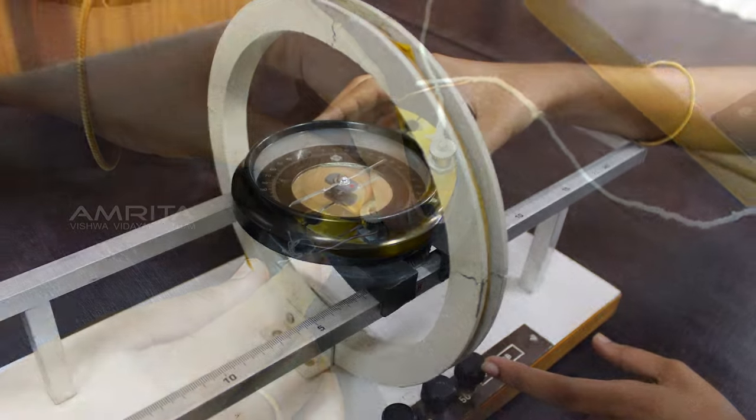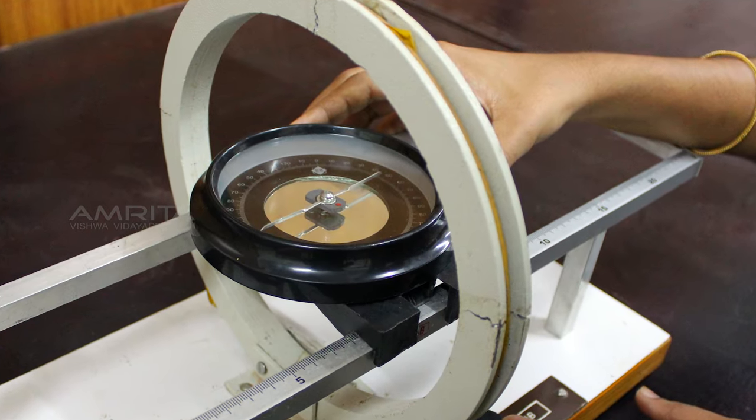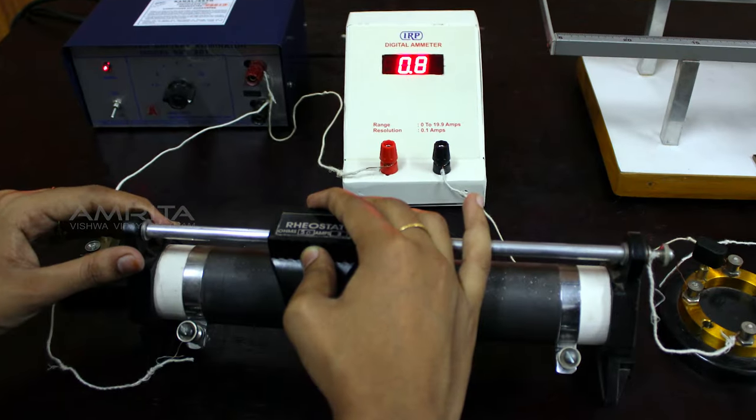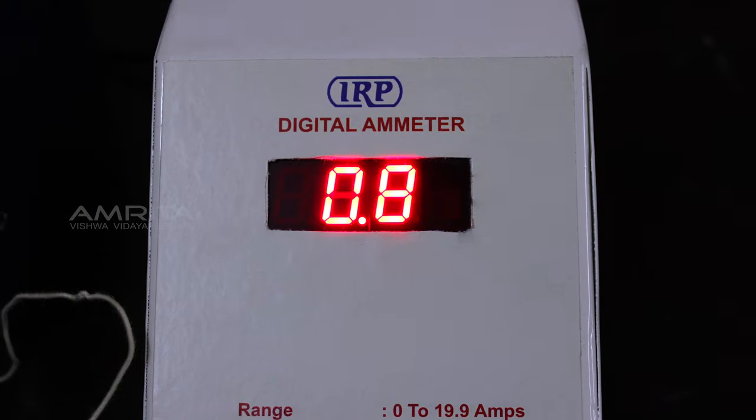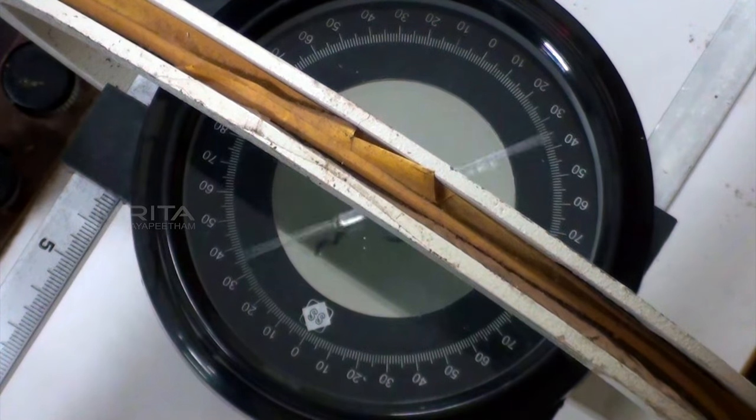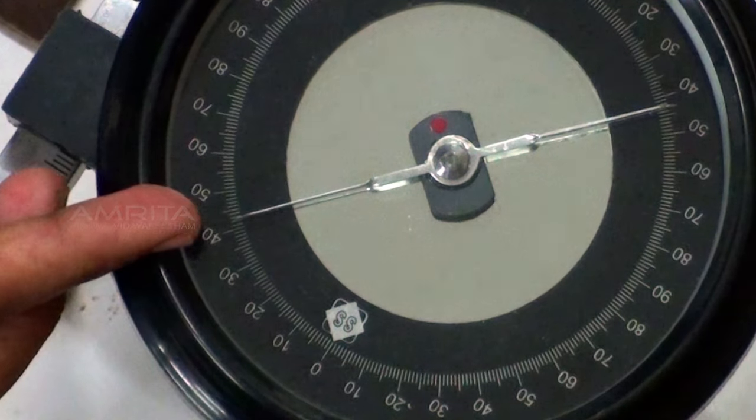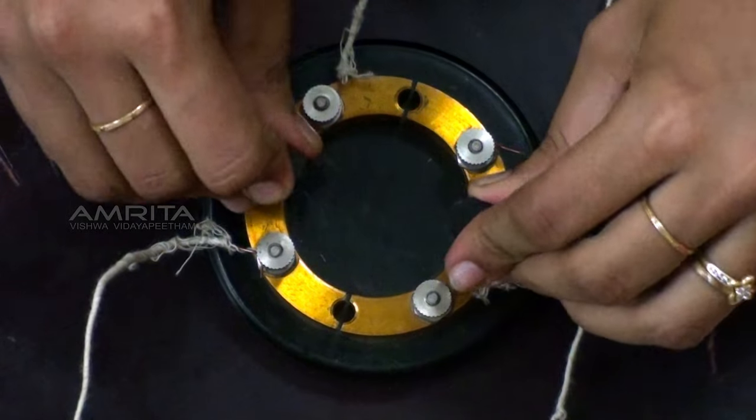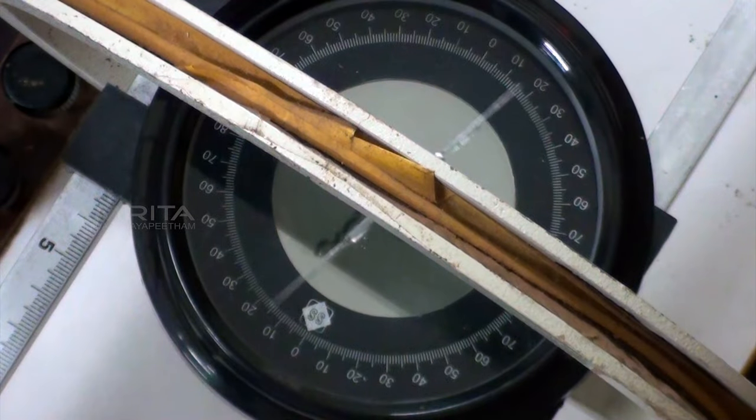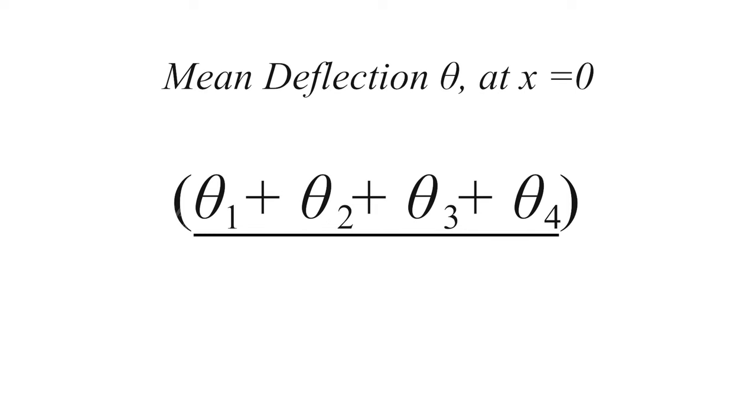Place the compass box at the center of the coil. Using the rheostat, adjust the current such that the deflection of the aluminum pointer is between 30 degrees and 60 degrees. Note the reading at both ends of the pointer. Reverse the direction of the current using commutator and again note the deflection. Then calculate the mean deflection θ at x = 0.